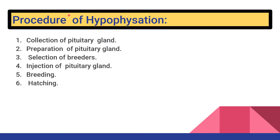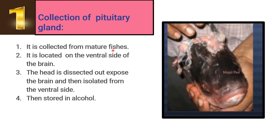The procedure or steps of hypophysation — there are six steps: collection of pituitary gland, preparation of pituitary gland, selection of breeders, injection of pituitary gland, breeding, and hatching. In the first step, the pituitary gland is collected from a mature fish.